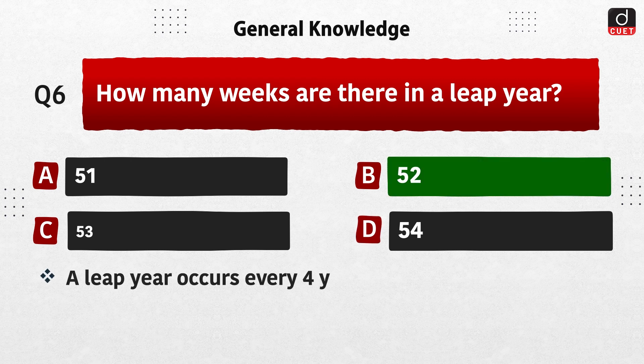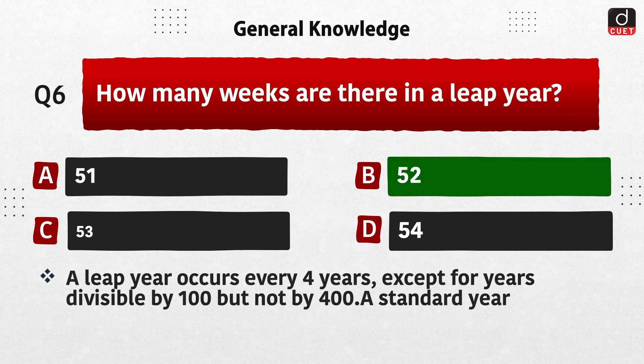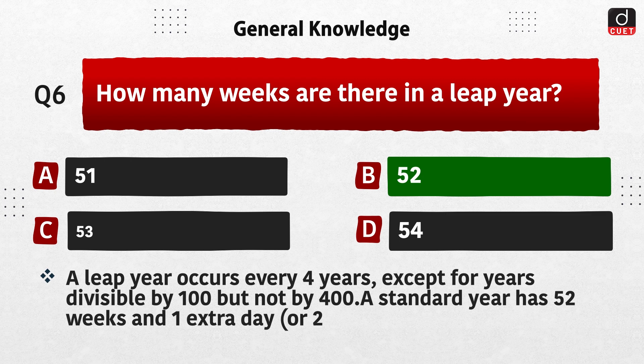A leap year occurs every 4 years except for years divisible by 100 but not by 400. A standard year has 52 weeks and 1 extra day, or 2 extra days in a leap year.